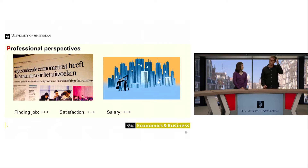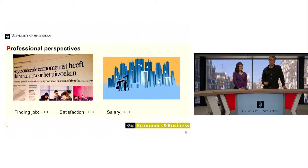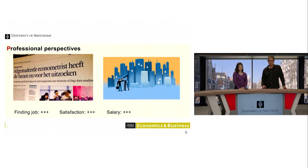First, the professional perspectives — there's only one thing I can say: it's just excellent. Once you have a degree in either Actuarial Science or Econometrics, professional perspectives are really good. There are three pluses for finding a job. Usually our people are working during their studies, before even finalizing them. More importantly, the satisfaction at their job is enormous, and it comes with a good salary — that's only a big advantage.